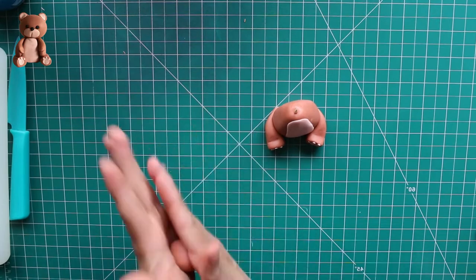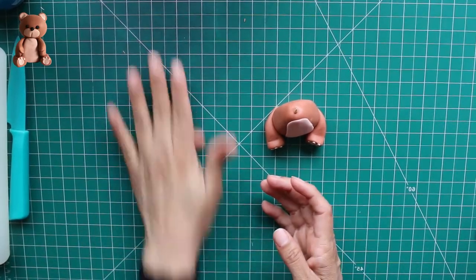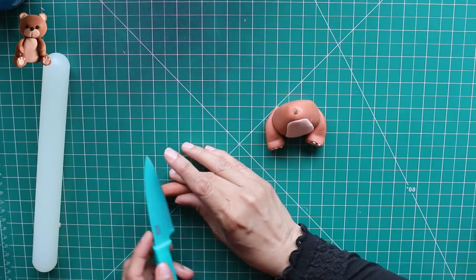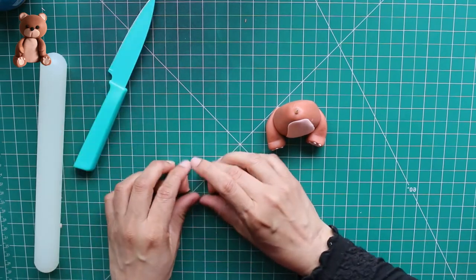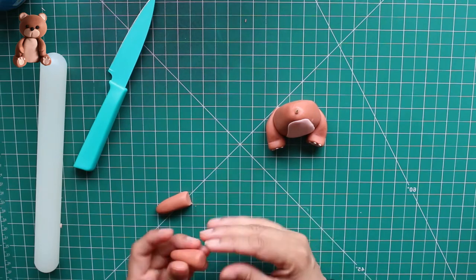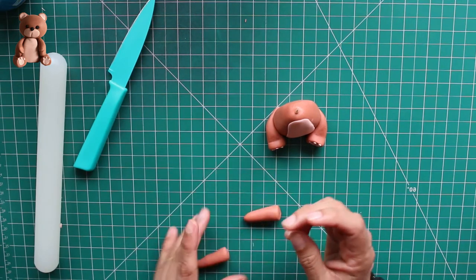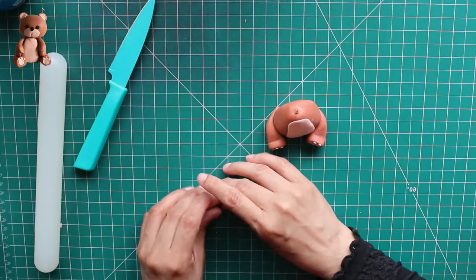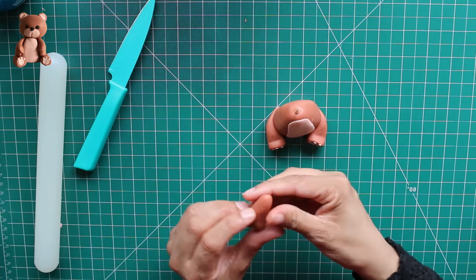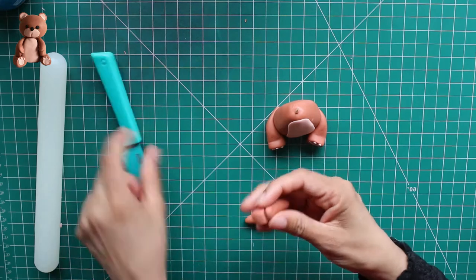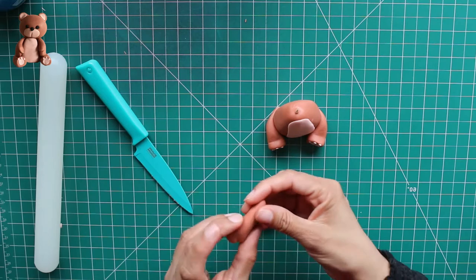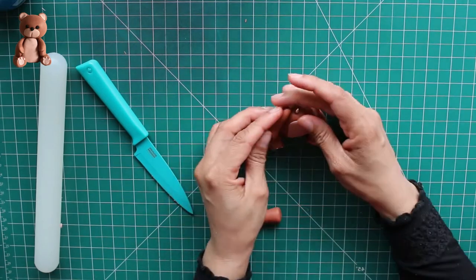Moving on to make the arms and the claws. So same process, just a sausage shape cut into half. And again, the wider end is going to be the claws. So at this point, I'm going to flatten the wider end of the arm and I will shape them into claws. So just flatten them with your hands and make a small incision on the side to make it sort of like a mitten shape. And that's your claw of the teddy bear.